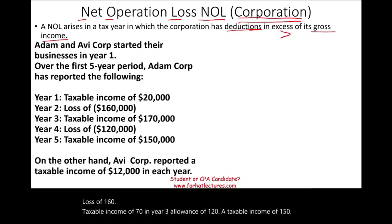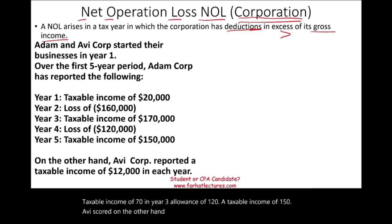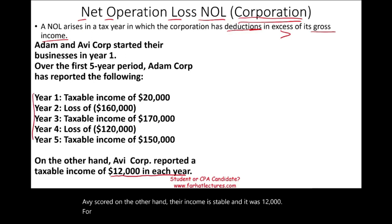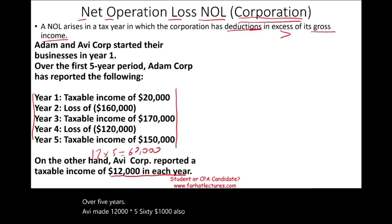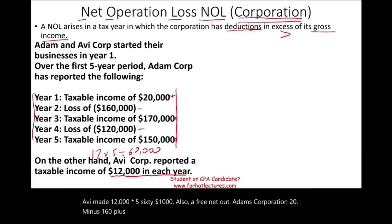Avi's Corp, on the other hand, had stable income of $12,000 for each of the five years. If we take $12,000 multiplied by five, over five years, Avi made $60,000. Also, if we net out Adam's Corporation — 20 minus 160 plus 170 minus 120 plus 160 — it also averages the same amount over five years.